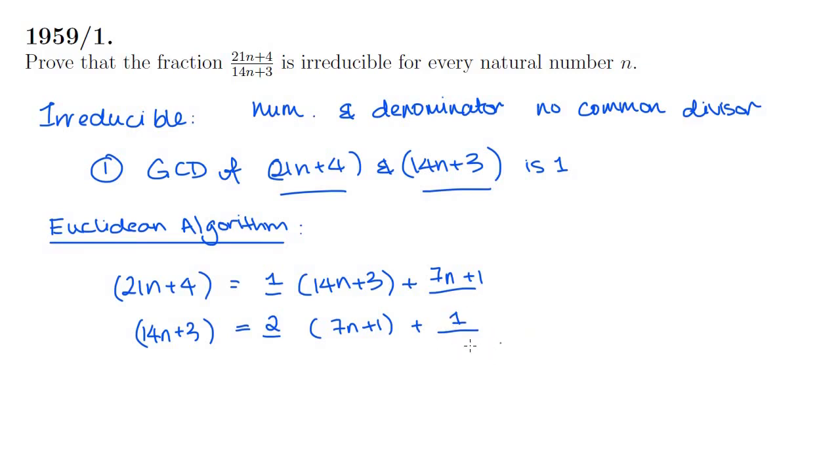And finally, we're very close now, we do it once more until we get a remainder of 0. So this time, let's take 7n plus 1 and write it as some multiple of the old remainder, which was 1, and a new remainder, which here is 0.